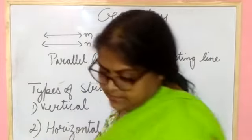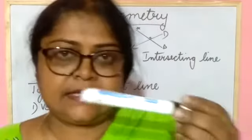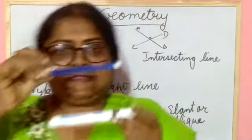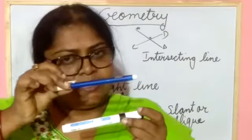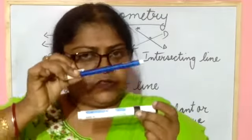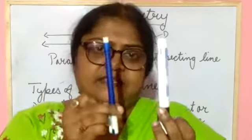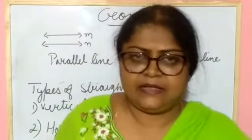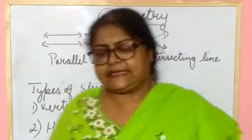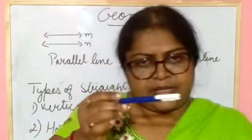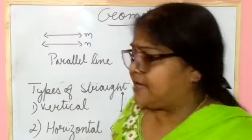Suppose one line is here and another line is here. If we extend these two lines from both sides, they will not touch each other — they will remain separate. This type of line is known as a parallel line. Line M and line M2, if extended from both sides, will remain the same and not touch each other.